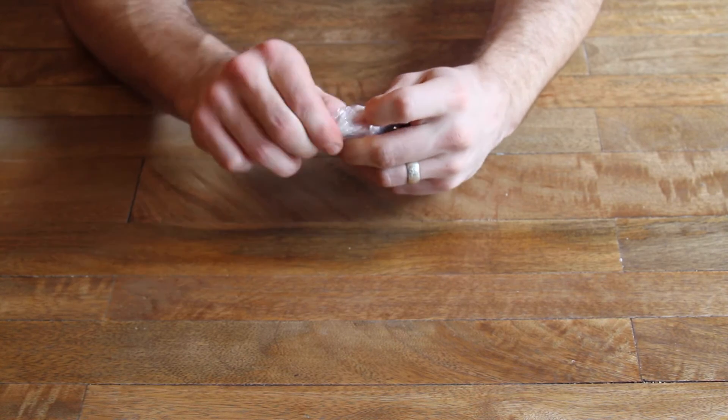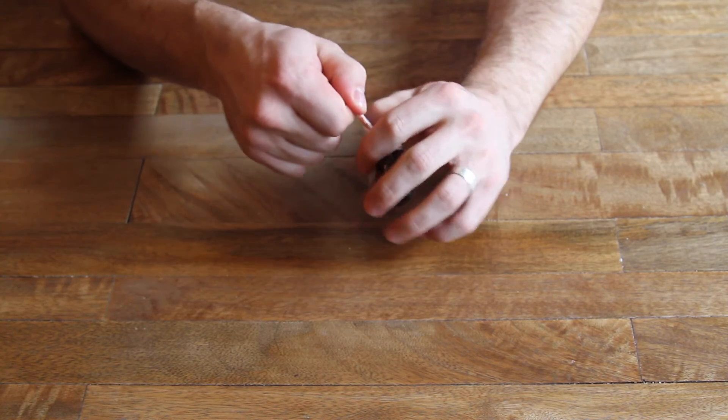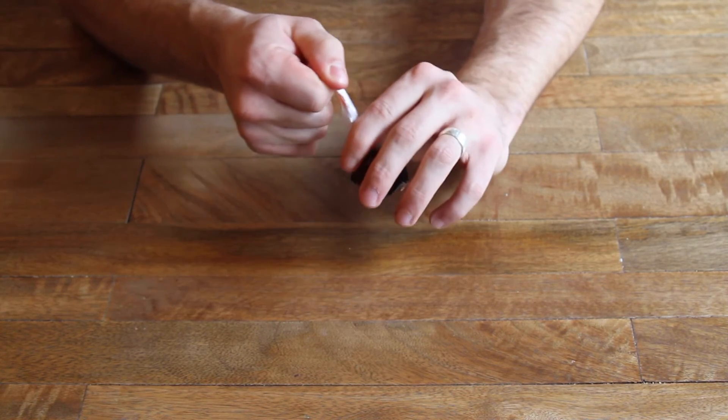Pull that excess all the way through that loop and then slide that knot down the bag to put pressure on the bag and the fluid.